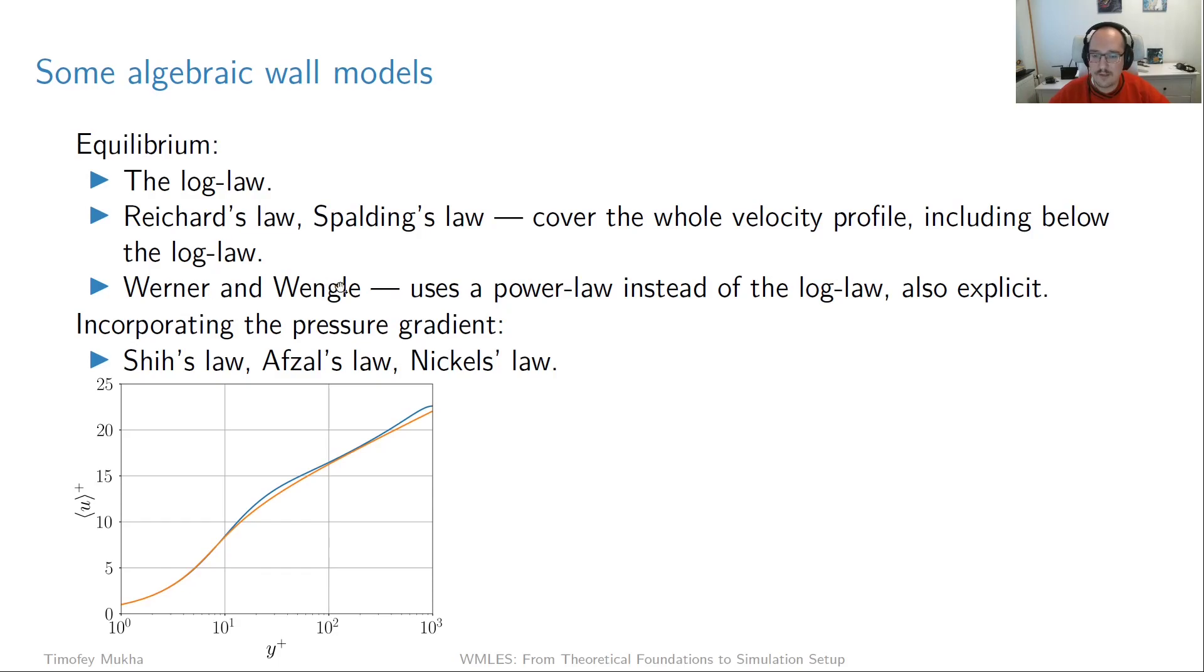Then we have a Werner-Wengle model. Which is a bit special, but I want to mention it because it's been used in several papers. And here, it actually doesn't assume a log law. Instead, we say that it's a power law. And that's something that has been in the literature also for a long time. So power laws instead of log law for the velocity profile. I think there's this one-seventh power law, for example. And also, the good thing about this model is that it is explicit. So you actually don't arrive to an equation for u tau. Rather, you arrive to an expression for u tau. You just have to plug in the numbers and you're done. So that's actually quite nice.